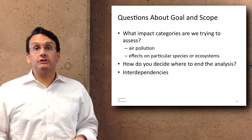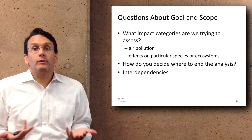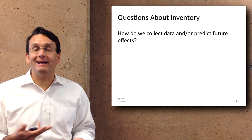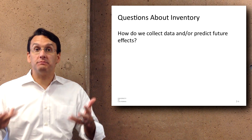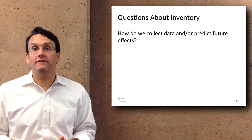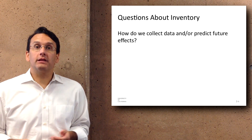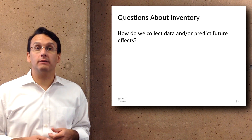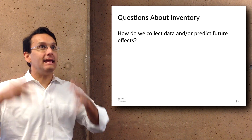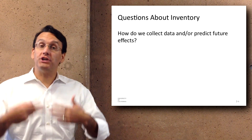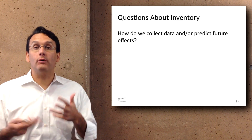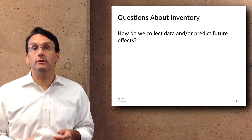With regard to the inventory, the question is how do we collect the data — what's our mechanism for finding out these measurements of the world? And how do we predict future effects? That's one of the things that modeling is good for — computational modeling in particular — taking the way things are now and projecting them into the future to see how things are likely to emerge.